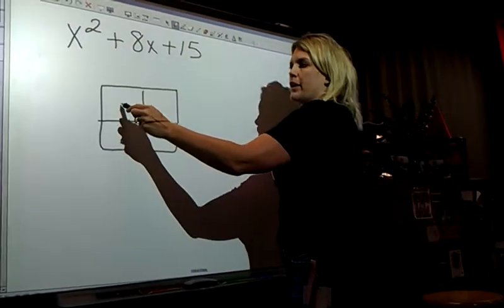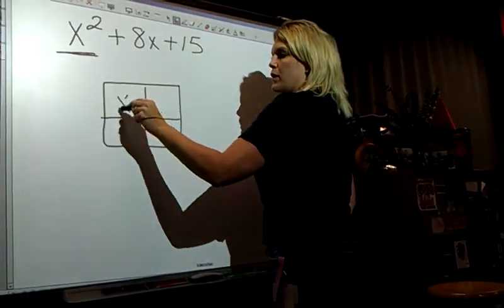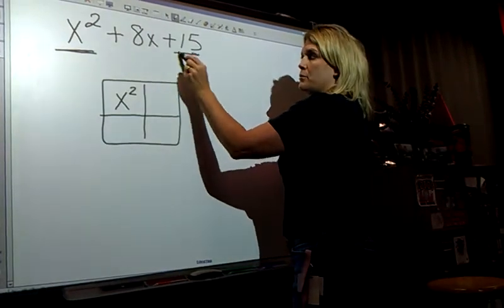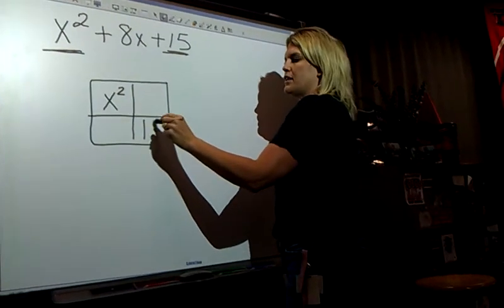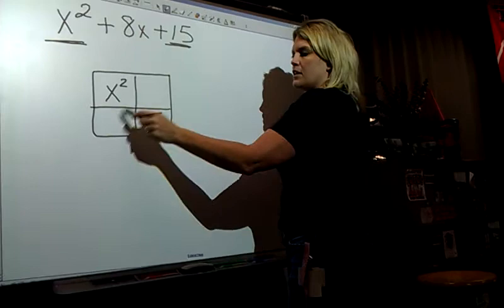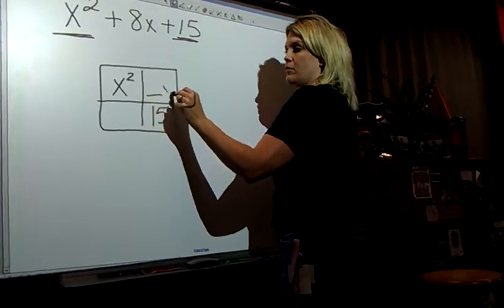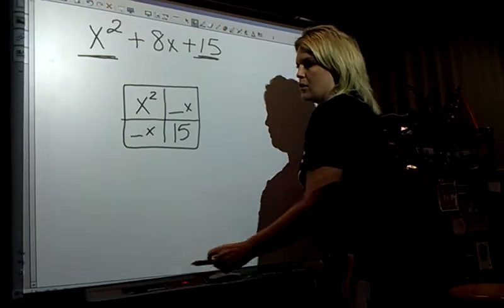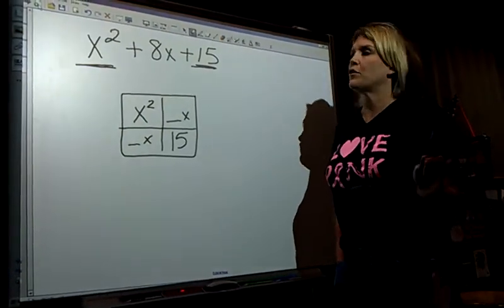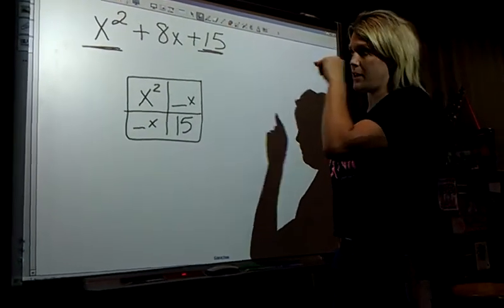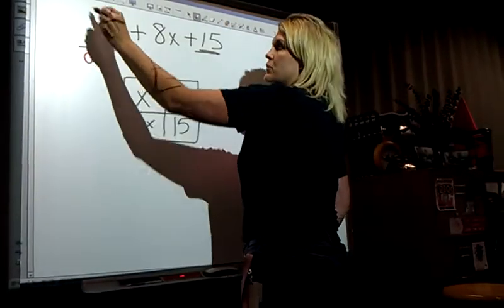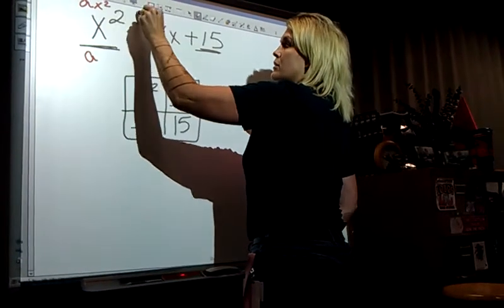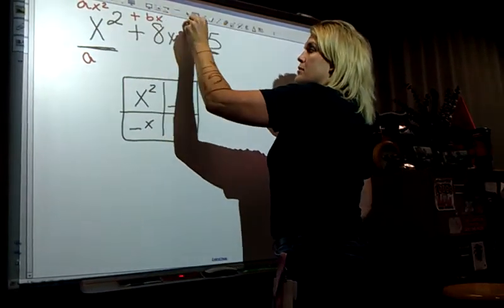In the top left-hand box always goes x squared. Bottom right-hand is 15. And then two x's on the other one. These are x's right here. Those I don't get so far. So now the first thing you do is go up here and you're going to have ax squared plus bx plus c.